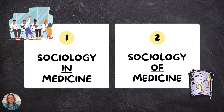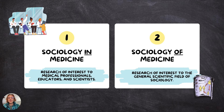When you crack open most medical sociology textbooks, they will start off by separating medical sociology into two categories: sociology in medicine and sociology of medicine. Sociology in medicine is research that's of interest to medical professionals, medical scientists, medical educators, medical practitioners — things that are important to medicine as an institution.